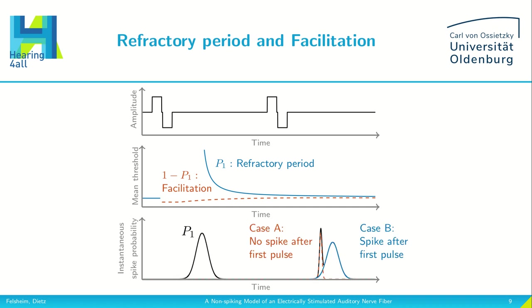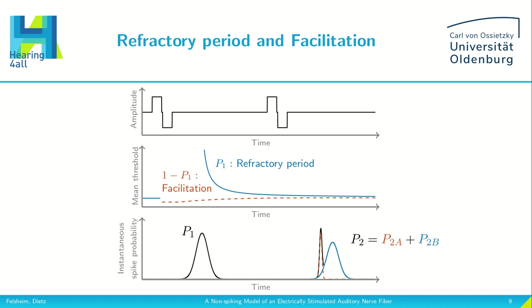When we stimulate with a second pulse, the output consists of two distributions due to the two paths in our model. Case A occurs if there was no spike after the first pulse; case B describes the behavior if there was a spike after the first pulse. The total spiking probability is the probability of spiking in case A plus the probability of spiking in case B. After a third pulse we would have up to four distributions in our output.